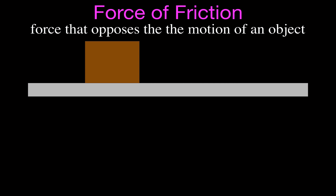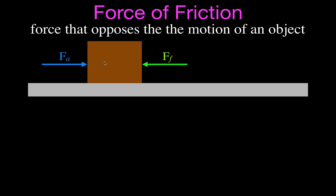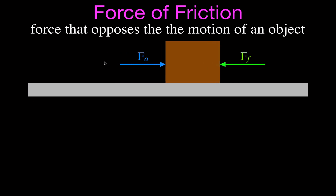Friction is simply the force that opposes the motion of an object. If you push in one direction, the friction force pushes in the opposite direction — the opposite direction of the applied force, or the opposite direction of the motion. If you push and the object's not moving, the applied force is less than the maximum static friction force. If you overcome the maximum static friction force, the object will start moving. How much its velocity changes will depend on the difference between the applied force and the kinetic friction force.